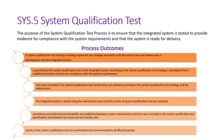The results of the system qualification tests are summarized and communicated to all affected parties. I have read all the process outcomes because I will go through them in detail in terms of base practices. We have to execute the system qualification test for the whole system, record the results in a tool, and ensure consistency and bidirectional traceability throughout this test procedure.